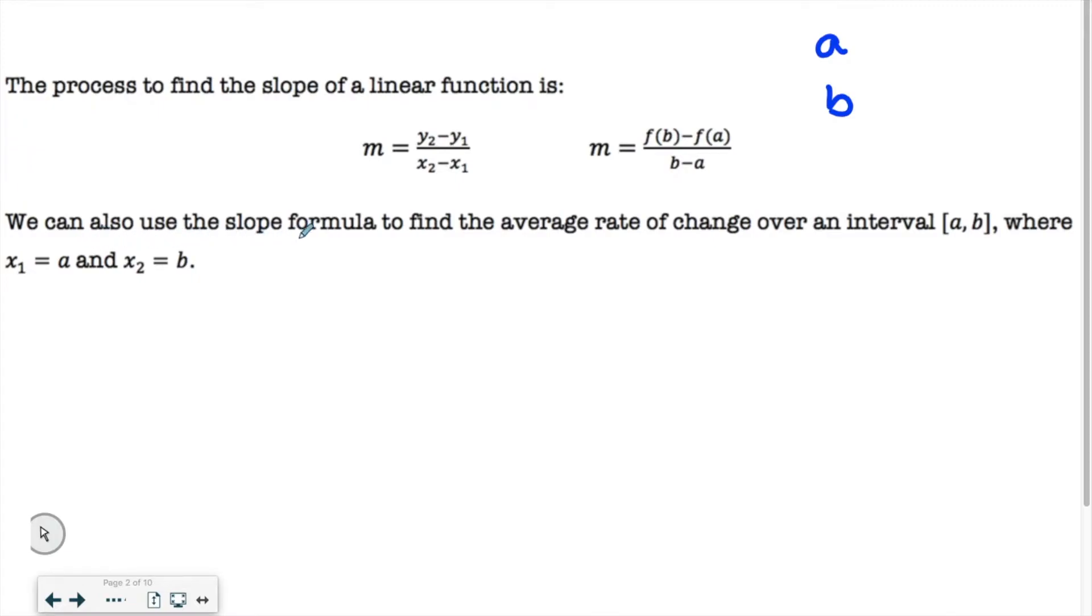And we could also use the slope formula to find the average rate of change over an interval. So they might tell you, between a and b, what is the average rate of change? And so you would just use one of these formulas. Either formula is fine. You just have to make sure that you have it in the correct order, and I'll show you what that looks like.